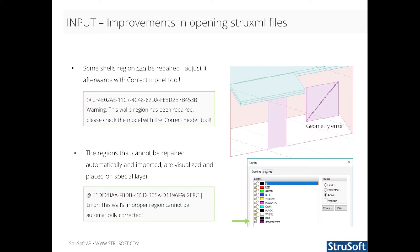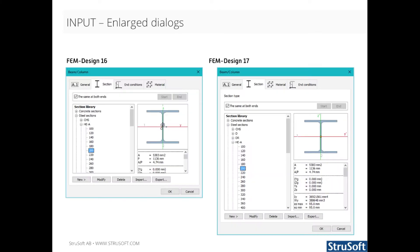This is just a graphic image that shows what the bad object looks like and where it is located. Most dialogs in FemDesign 17 are now larger compared to the previous version.